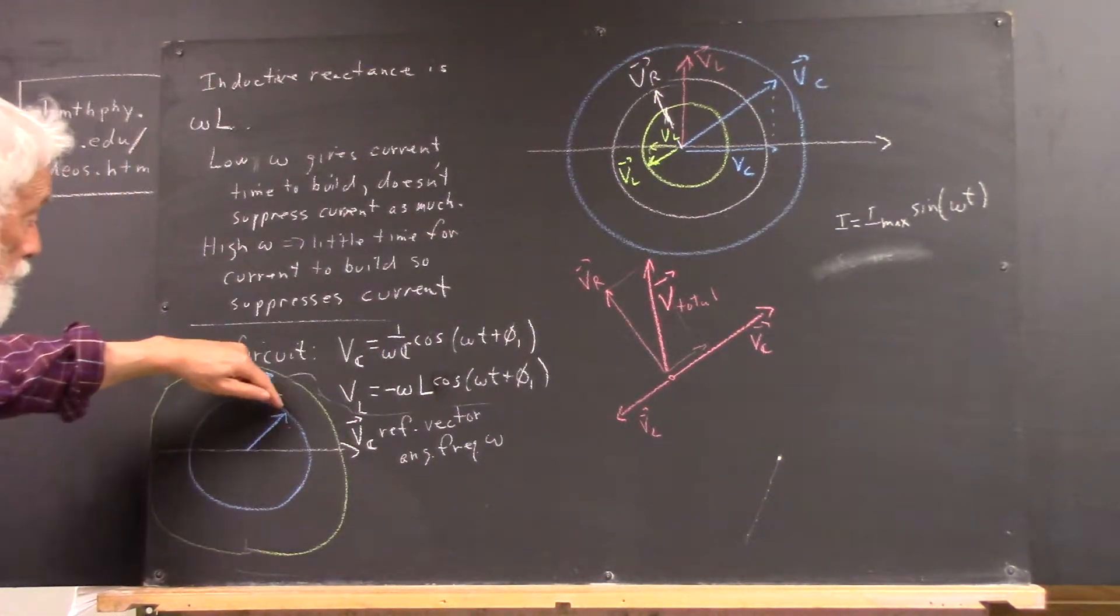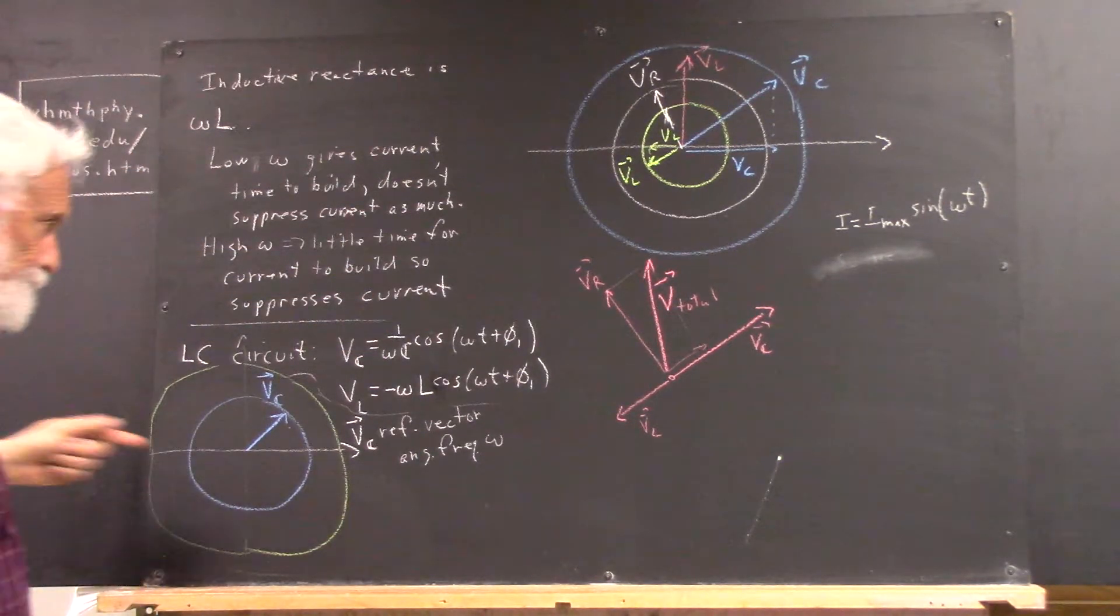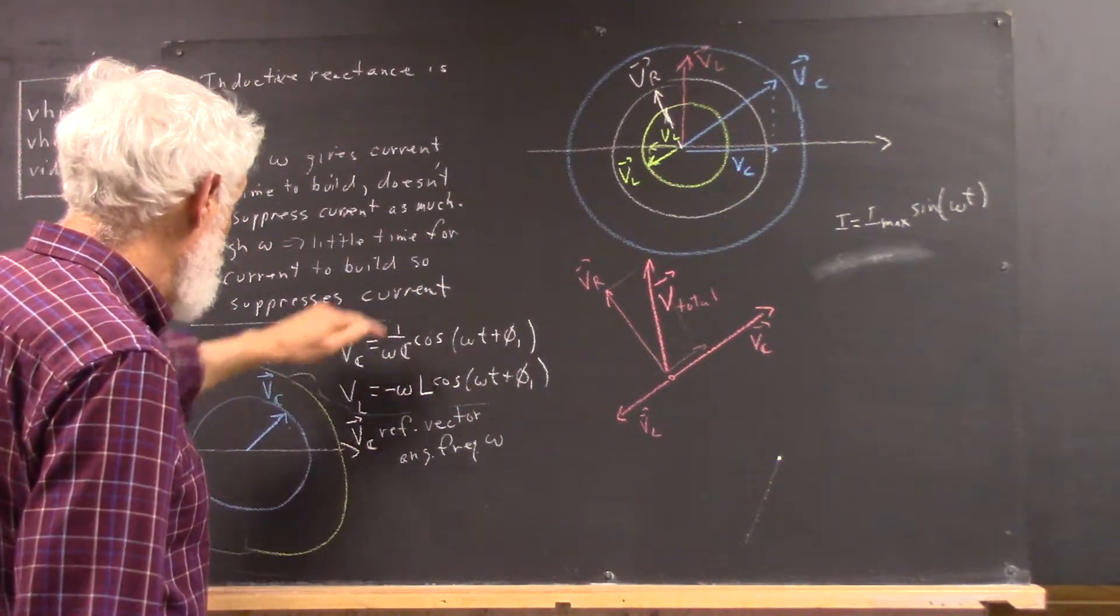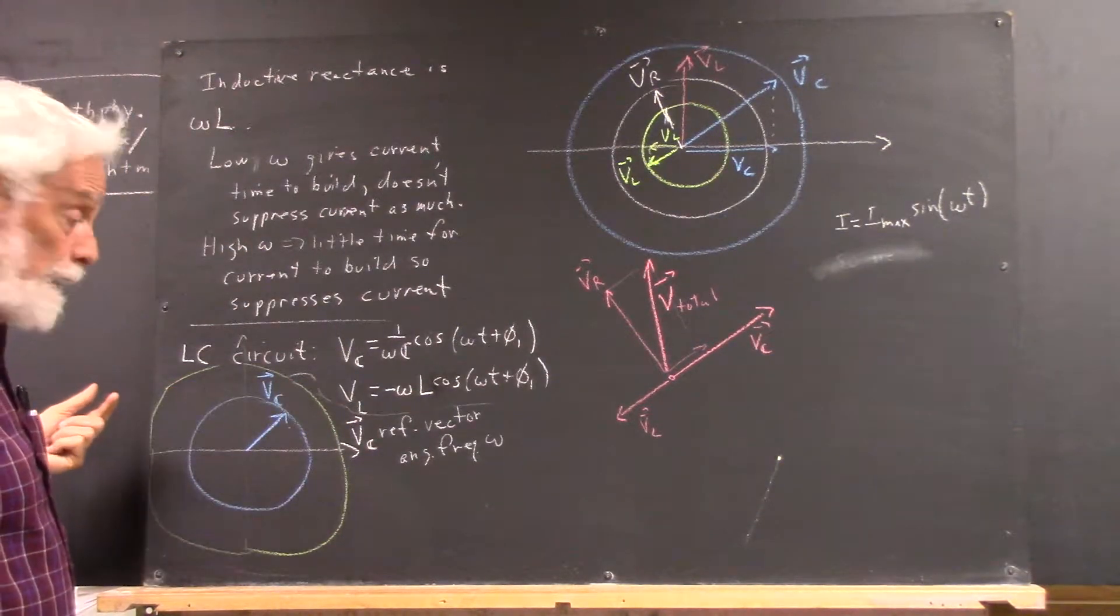Okay, so the length of this vector is 1 over omega C. And of course, C could be anything, L could be anything, so 1 over omega C could be bigger than omega L, could be smaller than omega L.